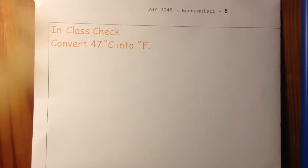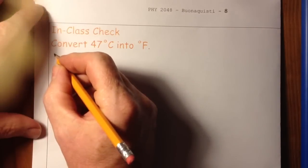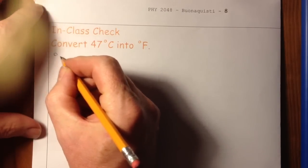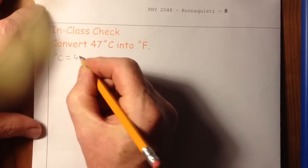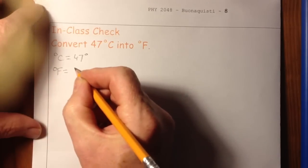So this problem is a conversion problem. It says convert 47 degrees C into degrees F. So let's put down what we know. We simply know that we have degrees C equals 47 degrees. And degrees F is what I'd like to find out.